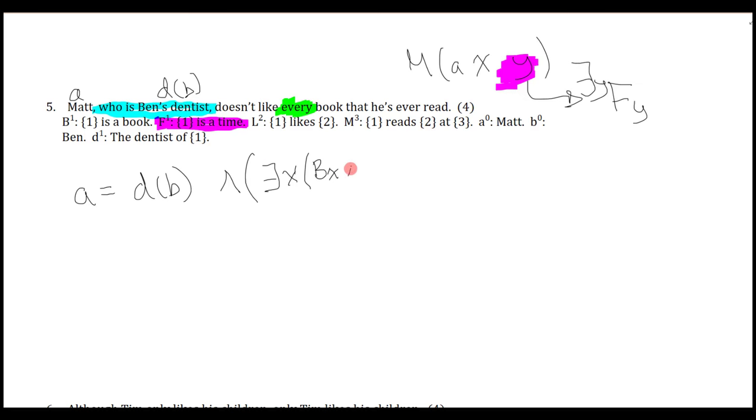So going back here, I can say there is a book and there is a time that. And then now I say Matt has read this book. And what's so special about this book? Well, if Matt doesn't like every book that he's ever read, it means there is a book, and there is a time that Matt read this and Matt didn't like it or doesn't like it. So it's not the case that Matt likes the book X. Oh, a lot of brackets.